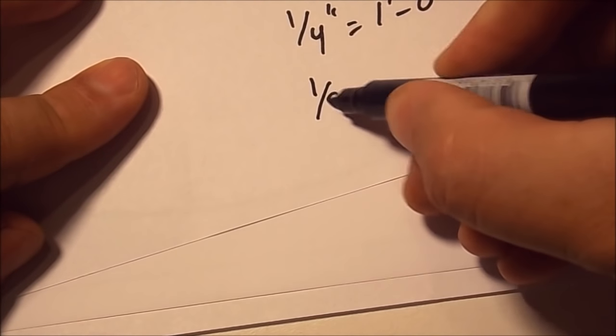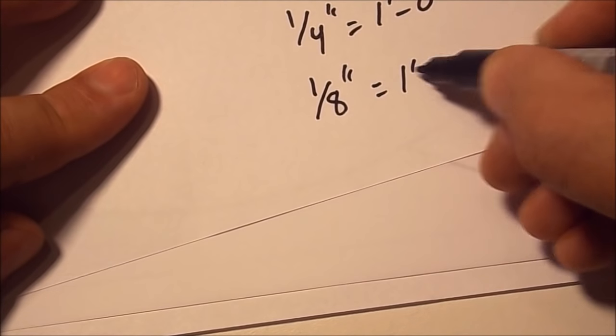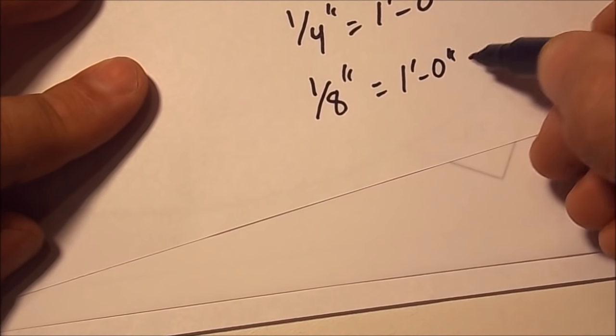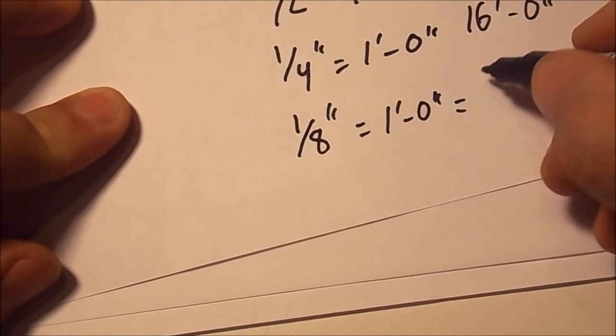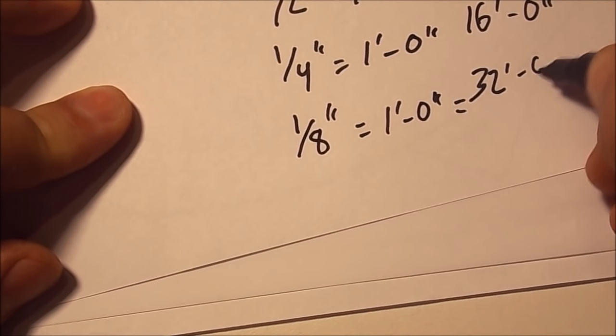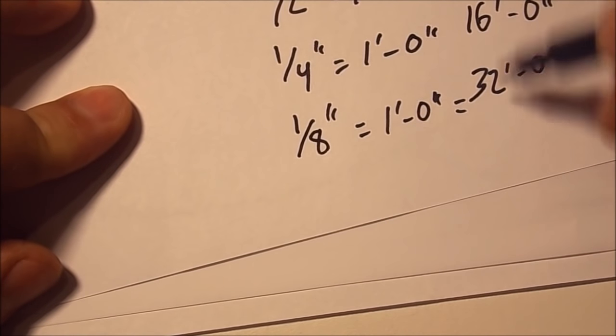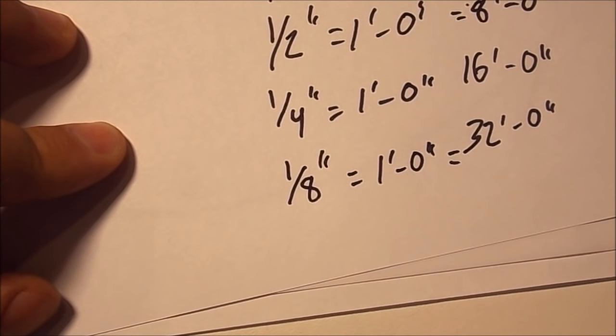Just one last one. We're not going to use the ruler for this. If we were to do one eighth of an inch equals one foot zero inches, if we were using that scale what would that be? Well it's going to be of course thirty two feet zero inches. So each one of these is doubling as we make the scale smaller.